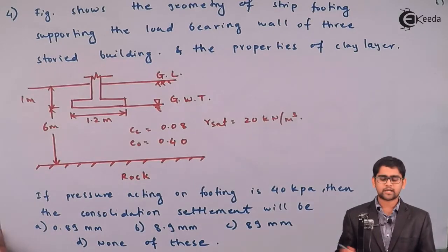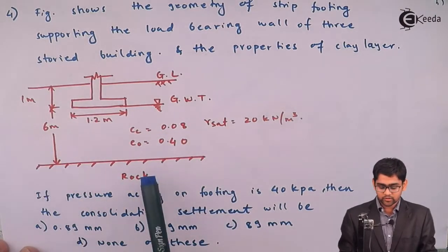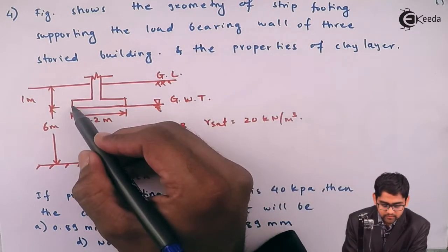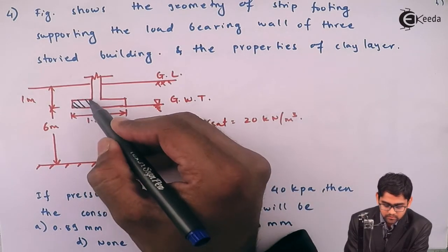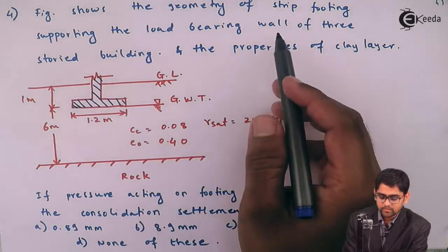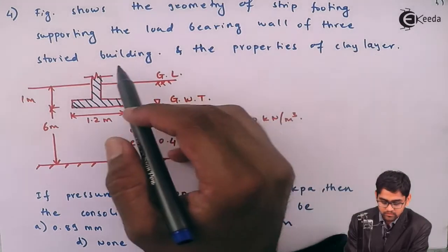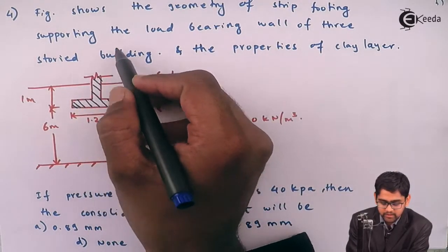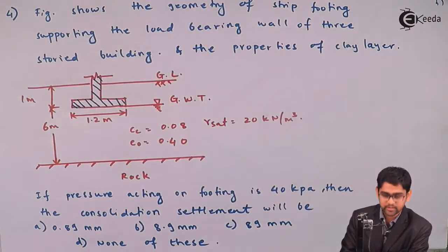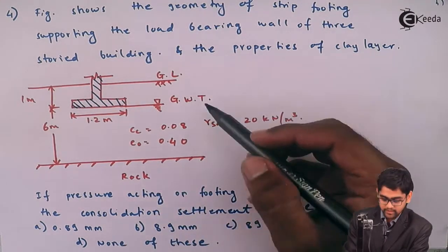Consolidation of soils. This is the fourth problem on the consolidation of soils. The statement goes as follows: In the figure shown below, it is a strip footing — a continuous footing for a load bearing wall. Above this footing there is a wall, and there are three floors in the building. It is a load bearing structure. The properties of the clay layer are given below.